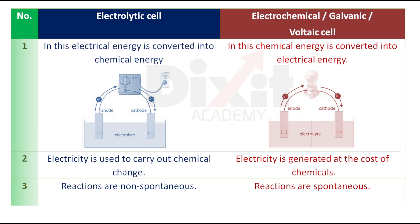Point number two: In an electrolytic cell, electricity is used to carry out chemical change. In an electrochemical cell, electricity is generated at the cost of chemicals.